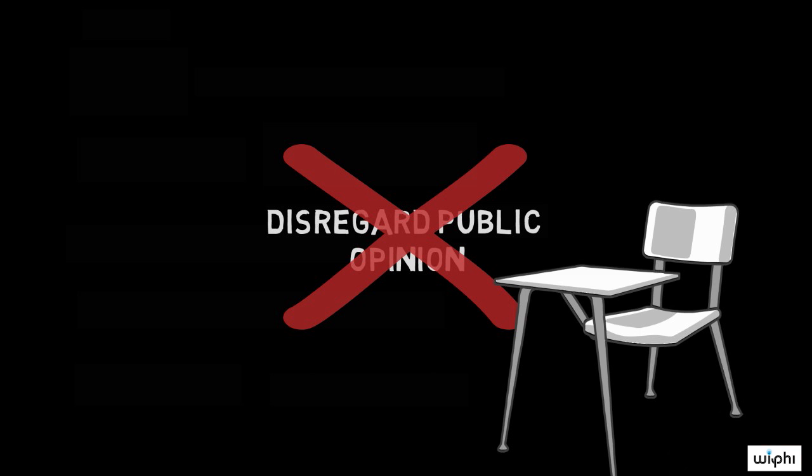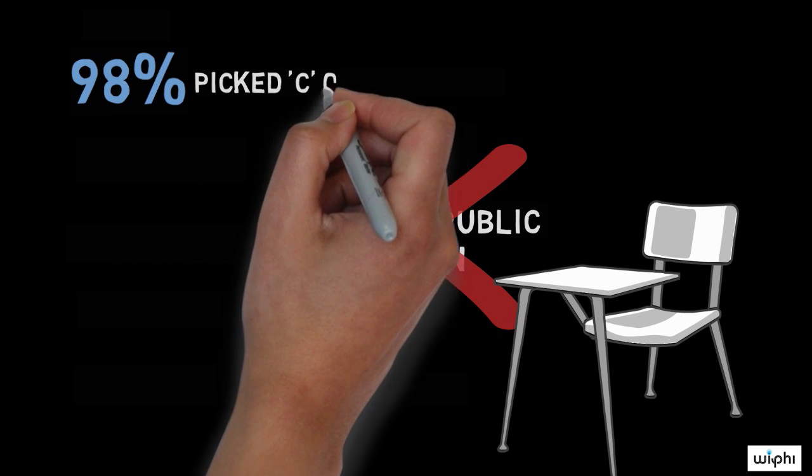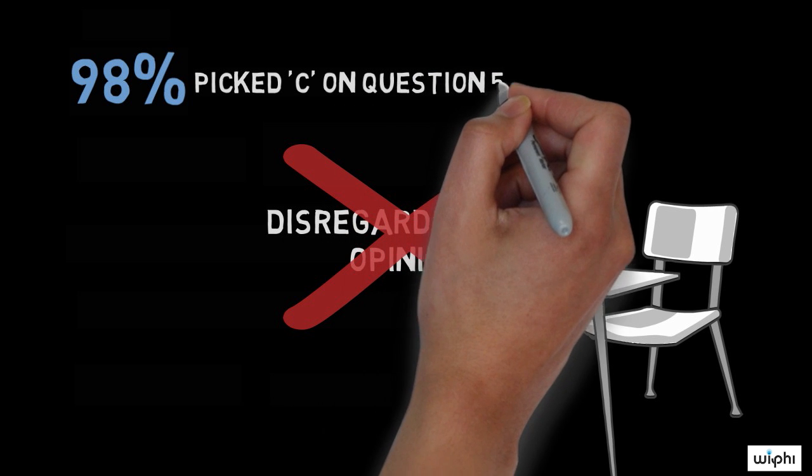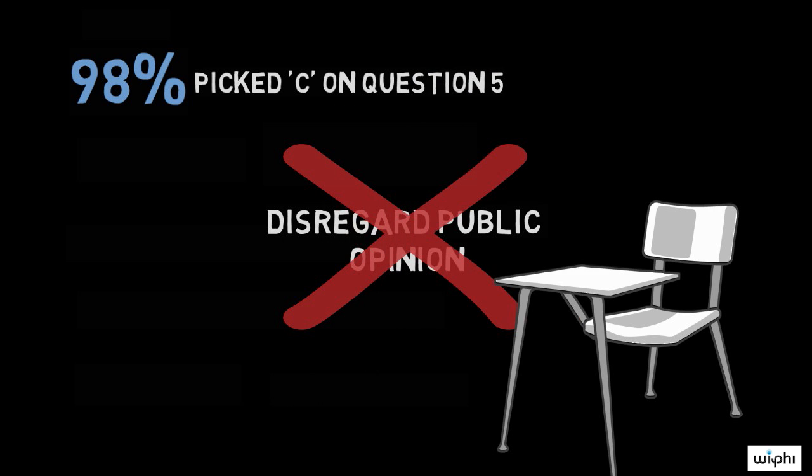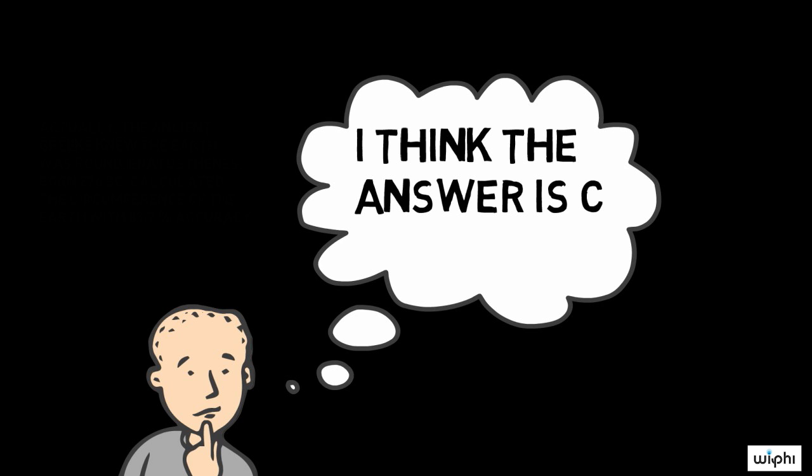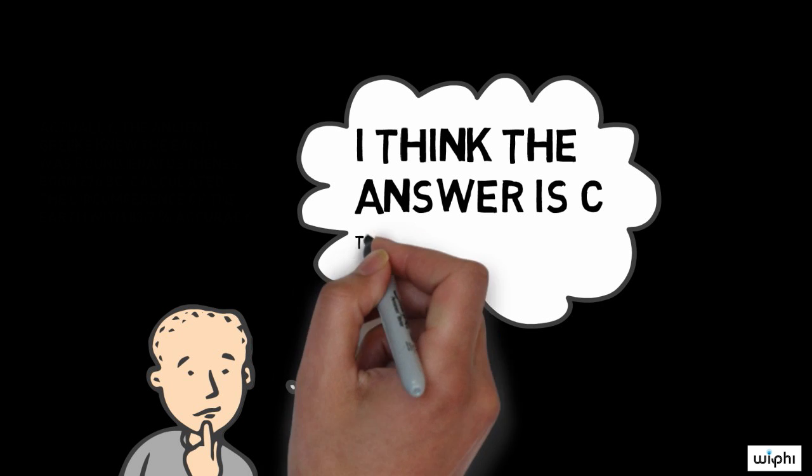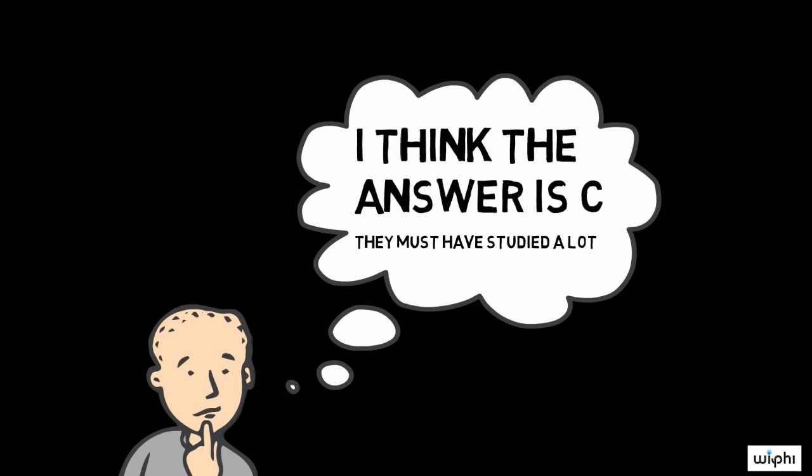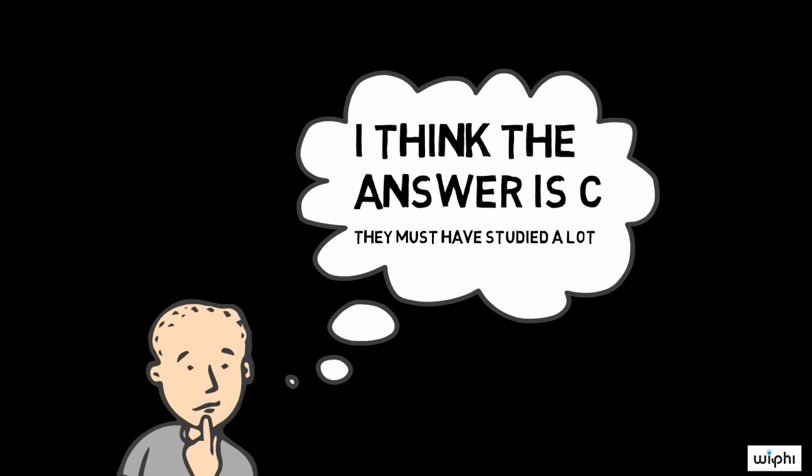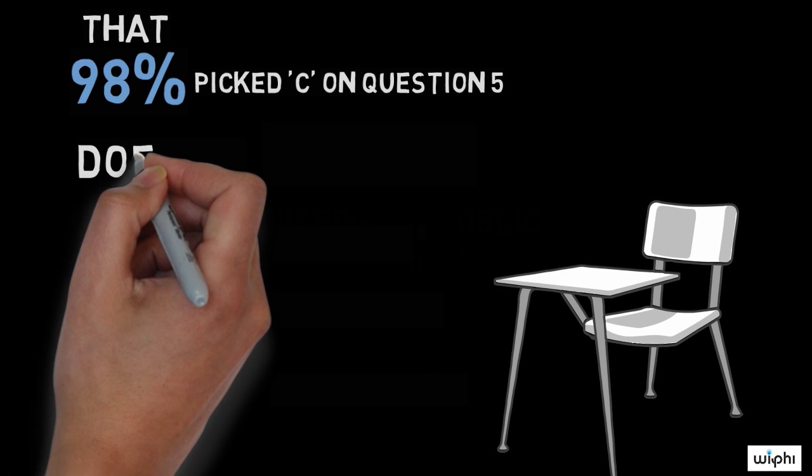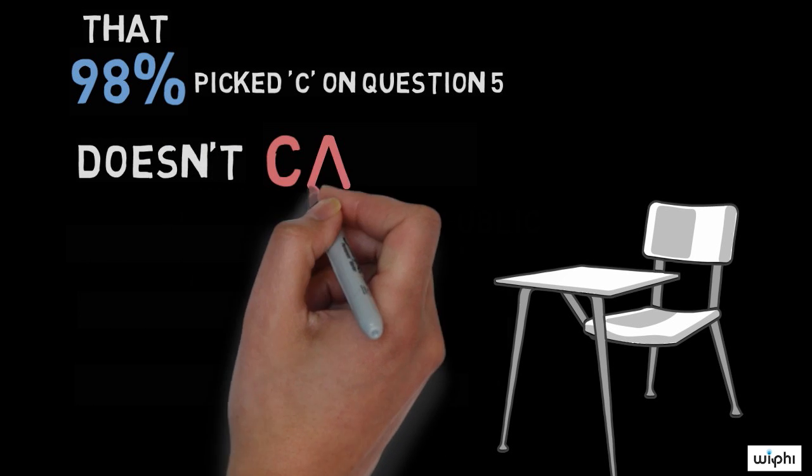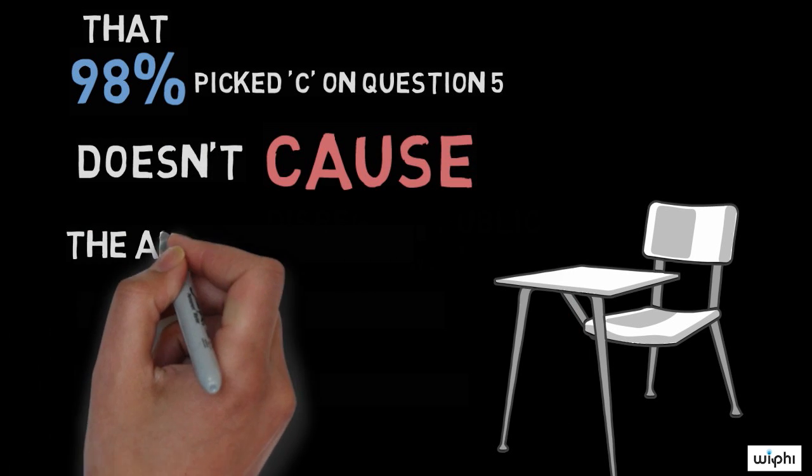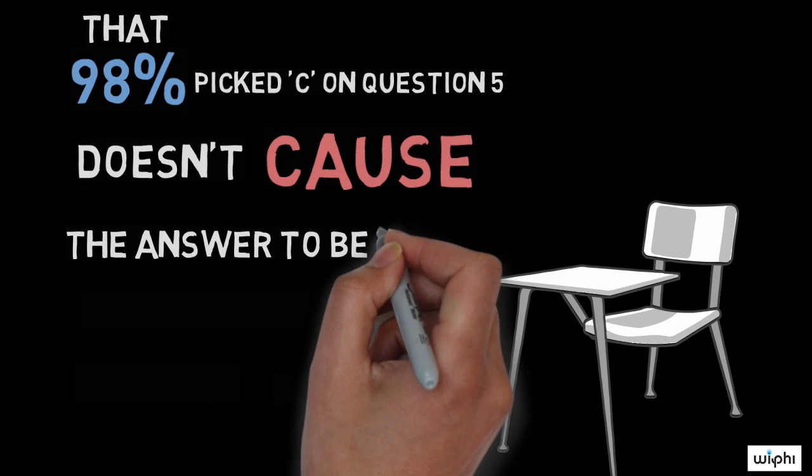If, for example, you find out that 98% of your sociology class thought that the answer to question 5 on the exam was C, it would be reasonable for you to think that C probably was indeed the right answer. After all, if they all managed to arrive at that answer, it was probably because they properly studied for the test. You would be committing a fallacy, however, if you thought that the answer to question 5 was C because 98% of your sociology class had answered the question that way.